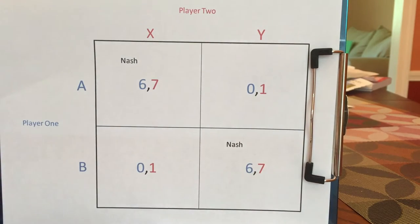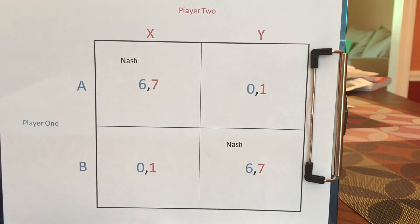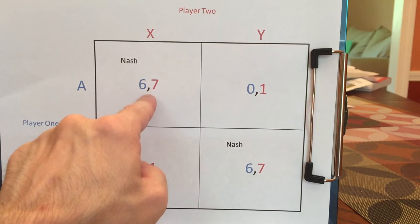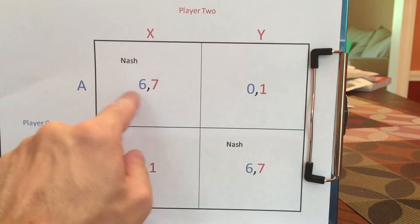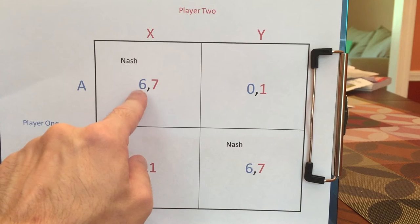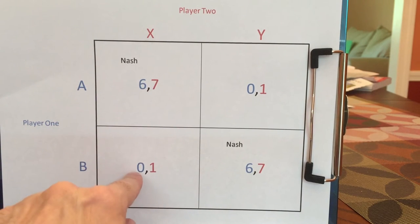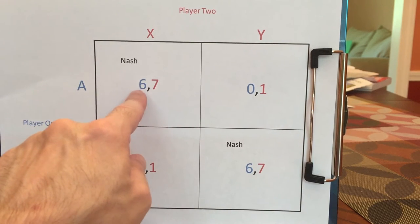Let's go through all four quadrants and see why we have this result. If the parties end up at AX, player one will say: I've played A, I get six. Had I done something different, I would have gotten zero. So I don't regret playing A.